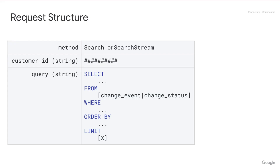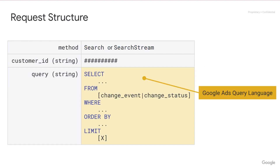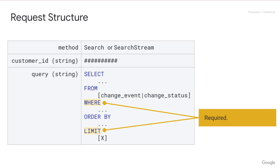Each request will use either the search or search stream methods, which are available in our client libraries or over REST. You'll also need a customer ID for each request. Then the query, which is a Google Ads Query Language string. For Change History data, you'll specify Change Event or Change Status in the FROM clause. Both services have extra Google Ads Query Language requirements, namely the WHERE and LIMIT clause. I'll get into the details of these requirements in a later video.